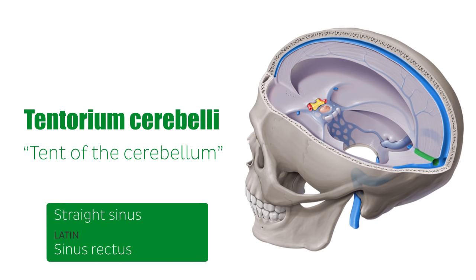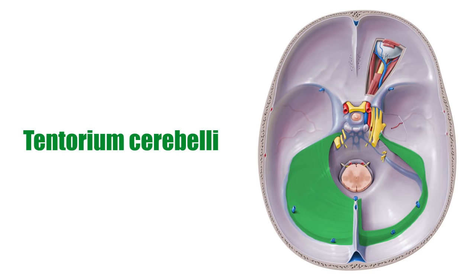The Tentorium cerebelli divides the cranium into supratentorial and infratentorial compartments by covering the cerebellum and separating it from the inferior aspect of the occipital lobe, to which it provides support. The anterior free border of the Tentorium cerebelli is known as the Tentorial Notch or Tentorial Incisure.